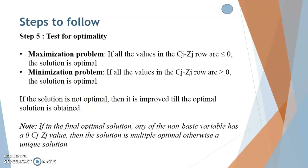Remember, in our Simplex tableau there is a column with basic variables in which we select the slack variables. After improving the table, there may be different incoming and outgoing variables. For the non-basic variables — that is, variables not in the basic variables column — if their value is 0 in the Cj minus Zj row, the solution is multiple optimal; otherwise it is unique.